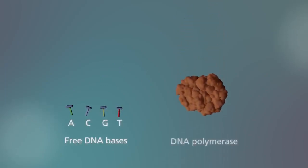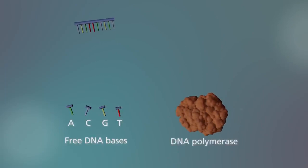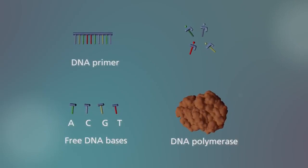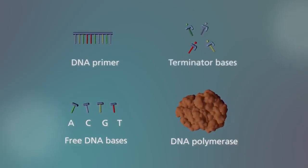These include free DNA bases A, C, G, T, DNA polymerase enzyme and DNA primers. Modified DNA bases labelled with coloured fluorescent tags are also added. These are called terminator bases.